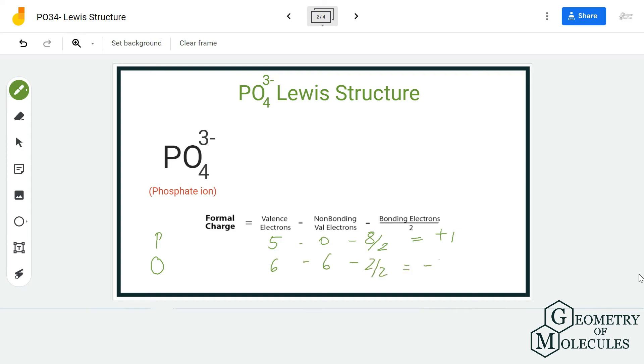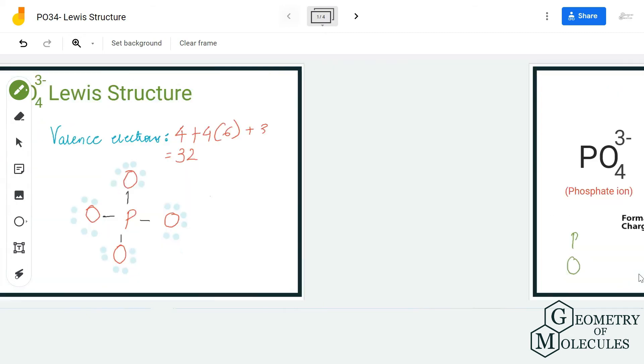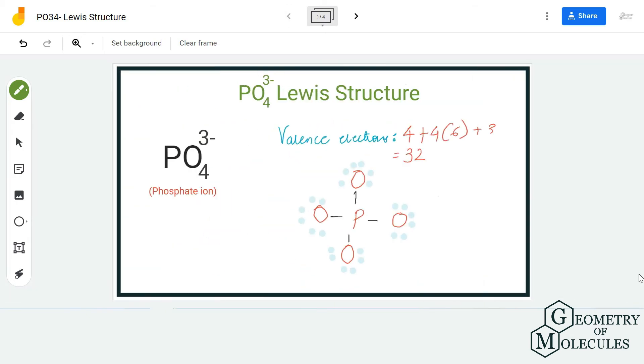Now, if you place all the charges, you will see that the end result we are getting is a -3 charge, which is fine because we do have a -3 over here as it is accepting three electrons. But in Lewis structures, we try to come up with structures in which formal charges are as close to zero as possible.